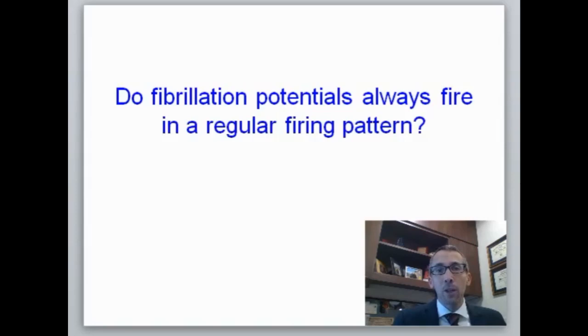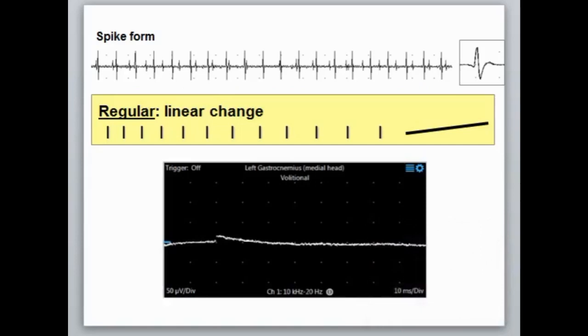A fibrillation potential is identified based on its firing pattern. Typically, fibrillation potentials fire in what we term a regular firing pattern. This means that when the fibrillation potential or spike is recurring and firing repeatedly, the interspike interval for each time it fires has a definable change.